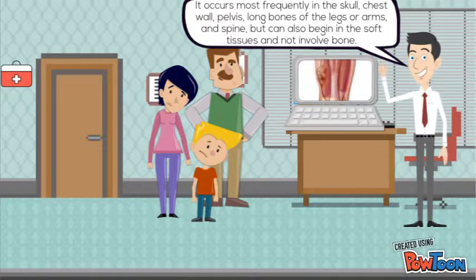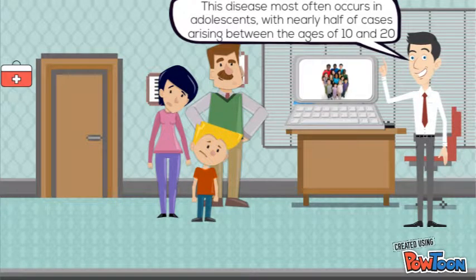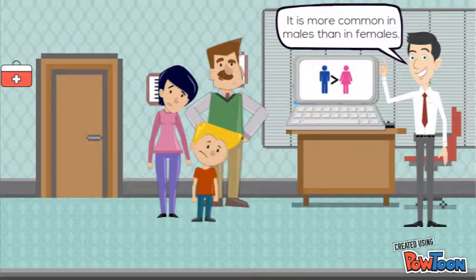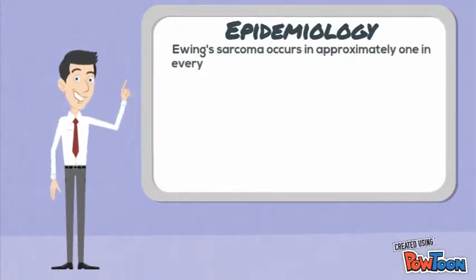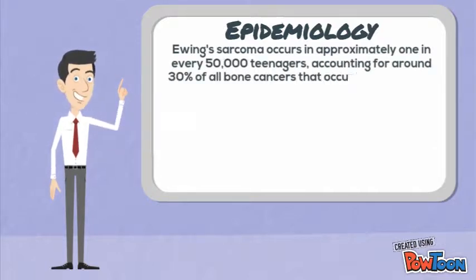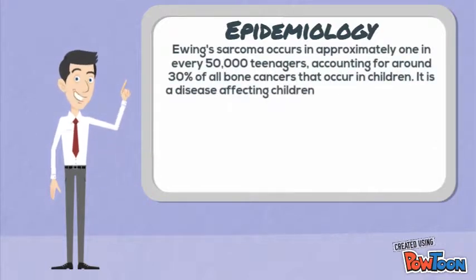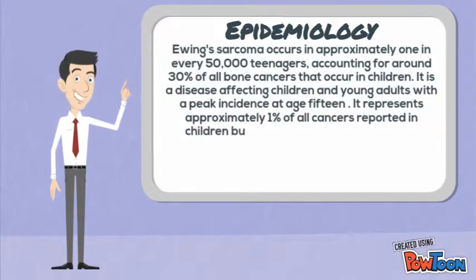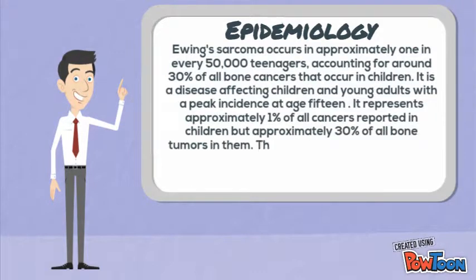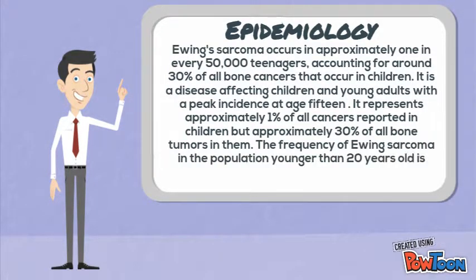This disease most often occurs in adults and it is more common in males than females. Ewing sarcoma occurs in approximately 1 in every 50,000 teenagers, with a peak incidence at age 15. It accounts for 30% of all bone cancer that occurs in children. The frequency of Ewing sarcoma in the population younger than 20 years old is approximately 2.9 per million.